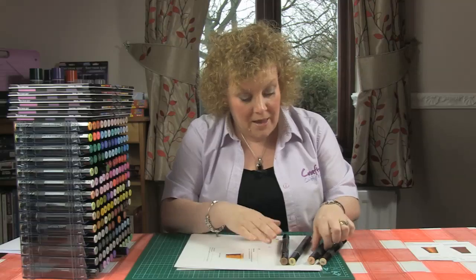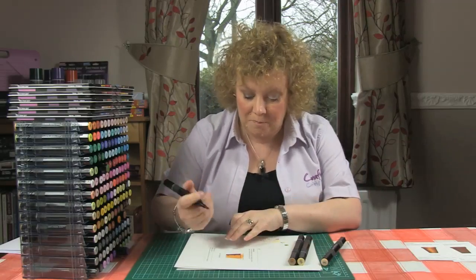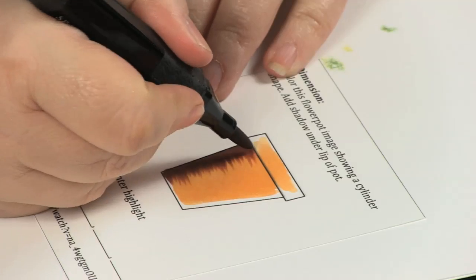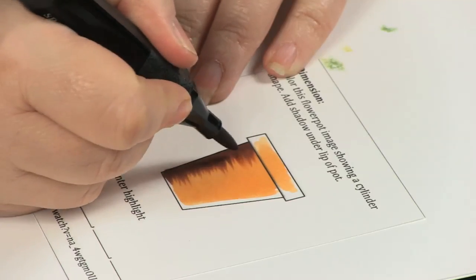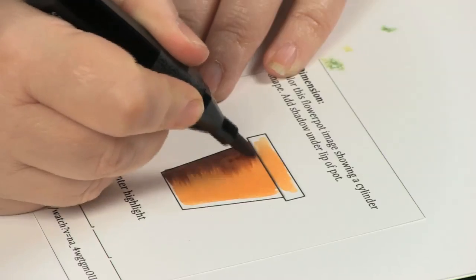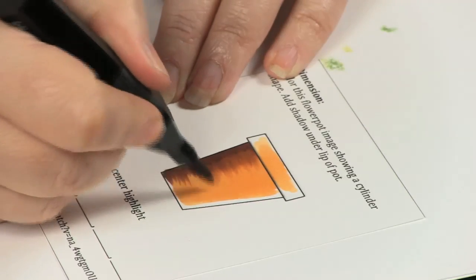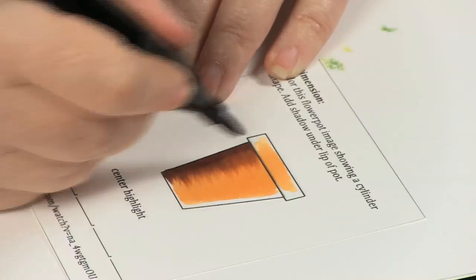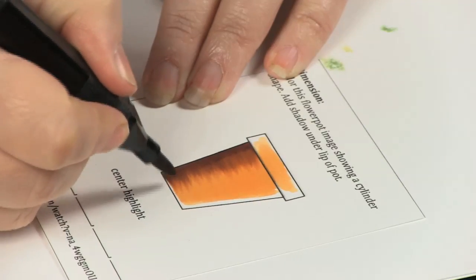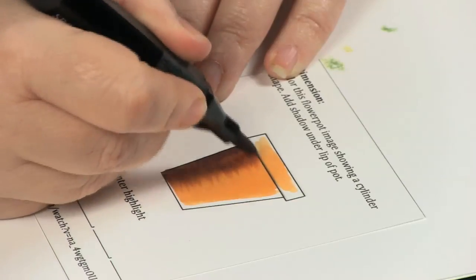So that's the TN7, and then we'll take the TN5, which is the next colour down, and we're going to repeat that process of just flicking over the top of where I've built the dimension there with the TN7. Flicking back over, catching the edges, not going right back to the end, and flicking further into the centre of the first layer of TN2.